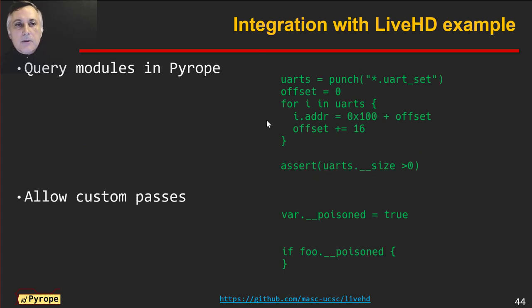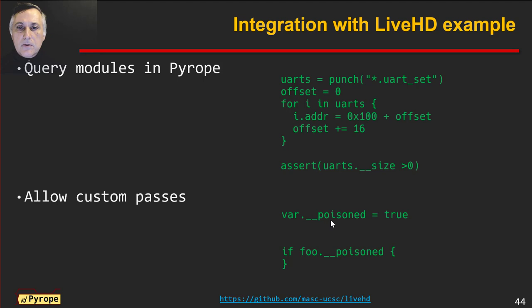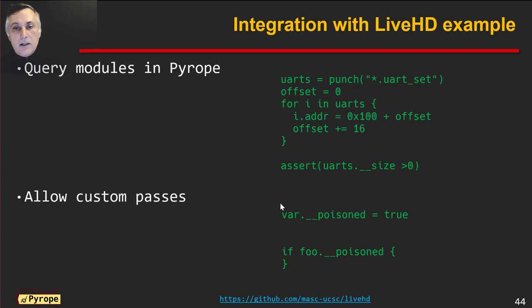Having the flow and the tool allows us to do many important things. For example, we can query modules in Pyrope. Here we have an example with UARTs — we can say, give me all the blocks that have these UART variables set, then iterate over the blocks and set the address to configure those modules. This is similar to diplomacy in Chisel, but we don't require any specific way of building libraries — we just build blocks to query and it propagates in a simple way. We also allow custom passes: you can get a variable and create an underscore-underscore poison attribute. This tags the variable with whatever attribute you specify, and you can build your own compiler passes to propagate poison or interact with the language.